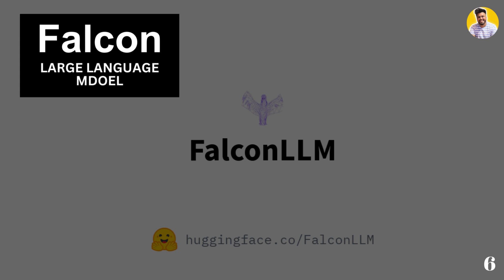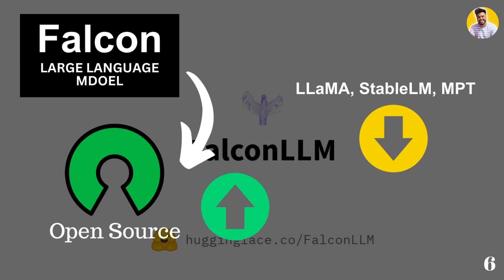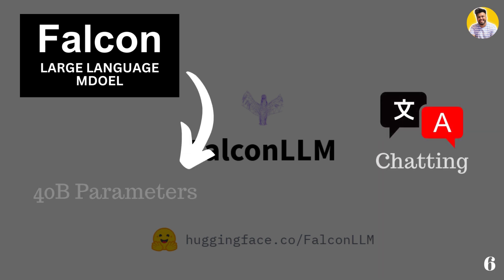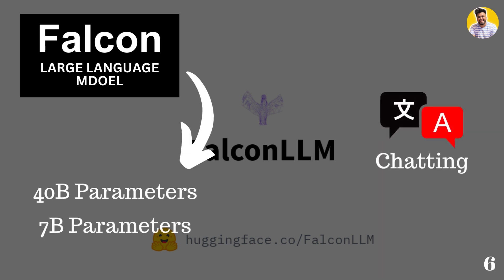Our next large language model is Falcon, an open-source model that has outranked all other open-source large language models including LLaMA, Stable LM, MPT, and many more. It is developed by the Technology Innovation Institute in the UAE and is available under the Apache 2.0 license. There are two Falcon models: one trained on 40 billion parameters and another on 7 billion parameters. For chatting use cases, you can use the Falcon 40B Instruct model and fine-tune it. Falcon is trained in English, German, Spanish, and many other languages.